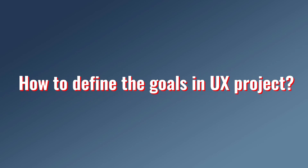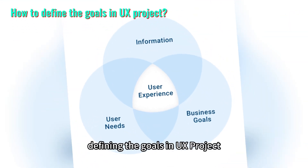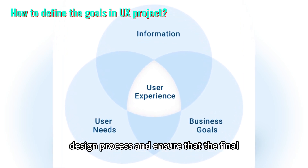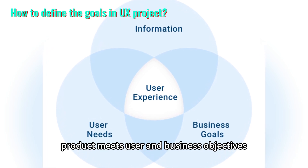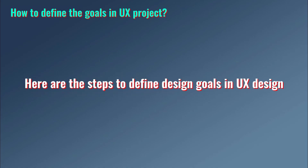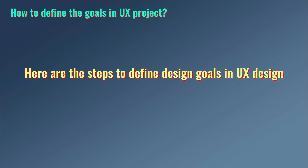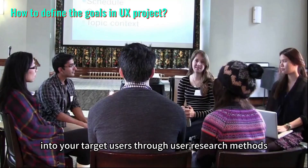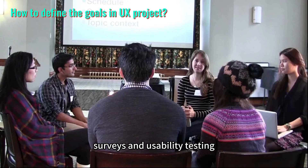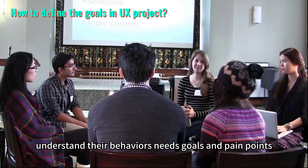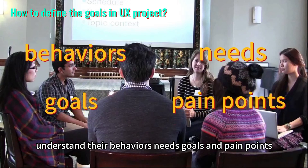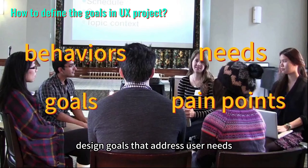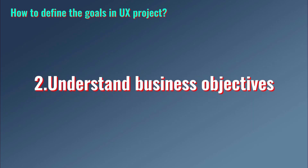How to define the goals in a UX project. Defining the goals in a UX project is a crucial step that helps guide the design process and ensure that the final product meets user and business objectives. Step one: conduct user research. Gain insights into your target users through user research methods such as interviews, surveys, and usability testing. Understand their behaviors, needs, goals, and pain points. This research will provide a foundation for defining design goals that address user needs.